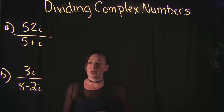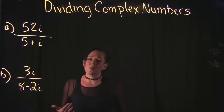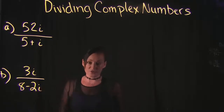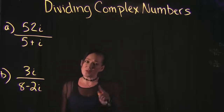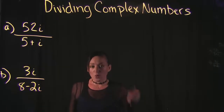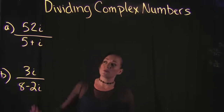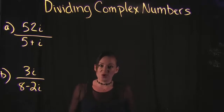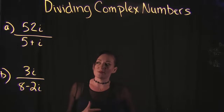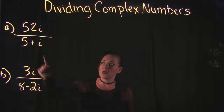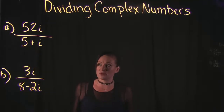In Example A, we have 52i divided by 5 plus i. We want to zero in on the denominator, and the key step to carry out this division is actually going to be a multiplication. We want to multiply our numerator and our denominator by the conjugate of our denominator. A conjugate looks almost exactly the same as the current denominator.